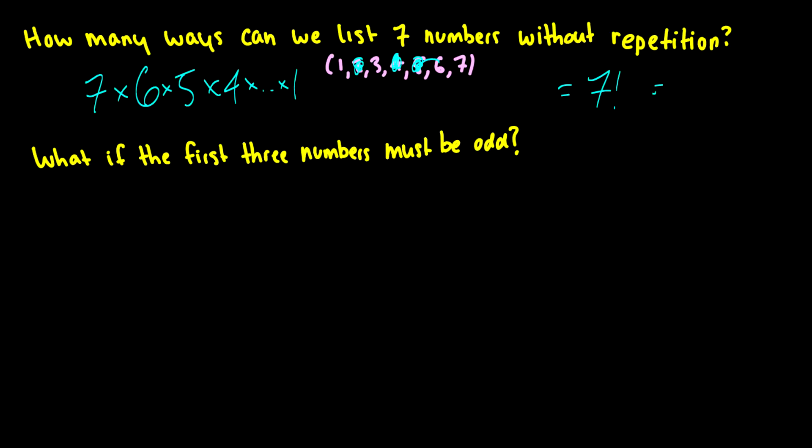7 factorial is equal to 5,040 permutations. So without repetition, you can list 7 numbers in 5,040 different ways, because the first position has 7 values it can choose from, the second position has 6 values because we can't use the same number twice, and so on and so forth.